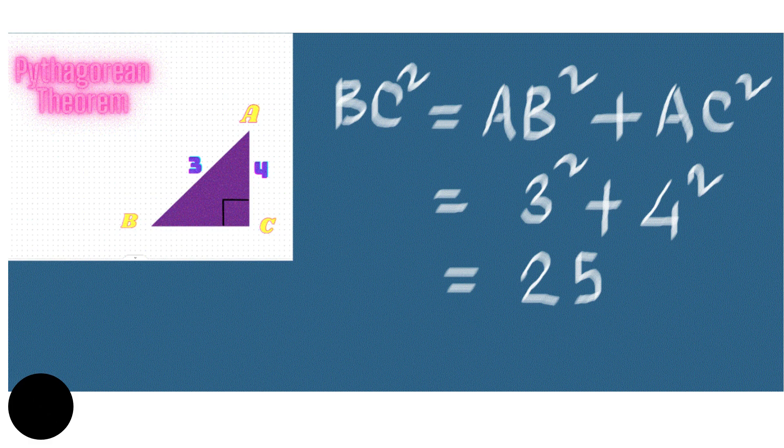So if you see here, BC square equals AB square plus AC square. So three square and four square altogether, it will be 25. That means BC, this side, is five units.